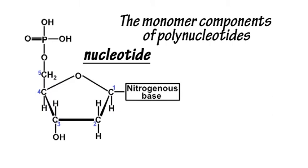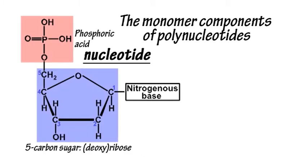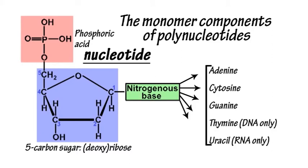Nucleotides have three parts to them. Phosphoric acid, a five-carbon sugar, and one of five nitrogenous bases.